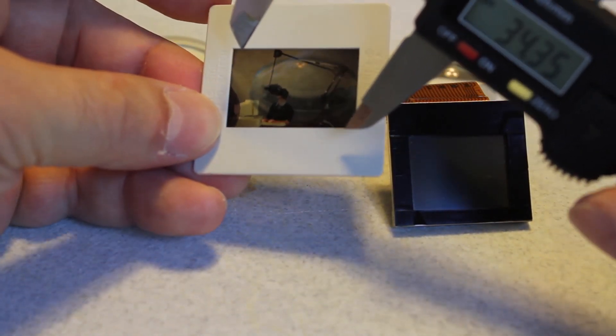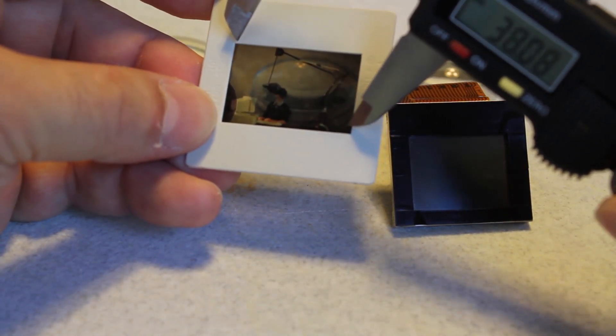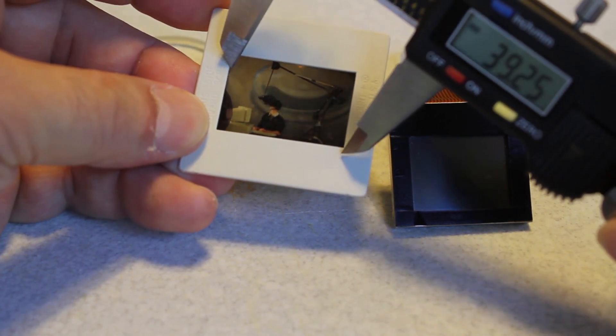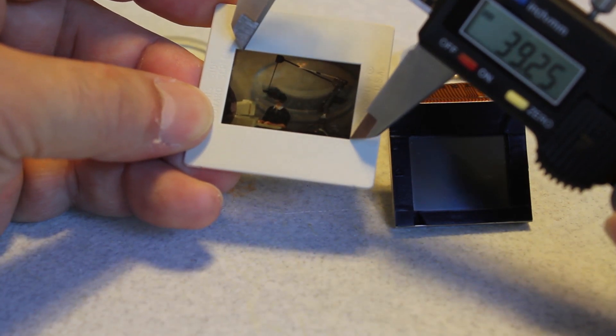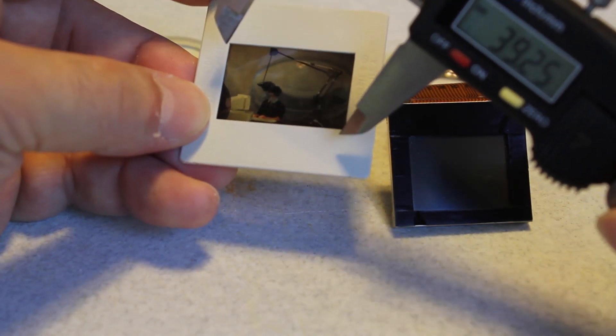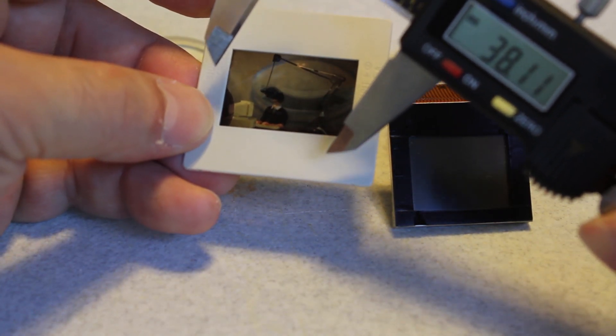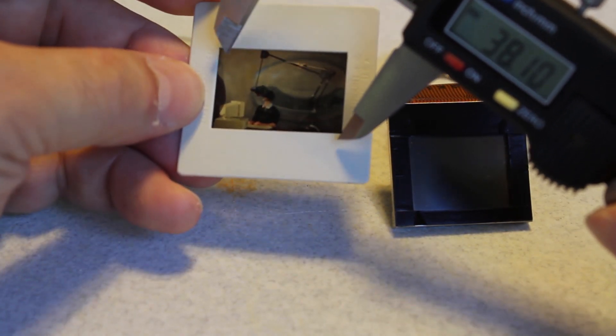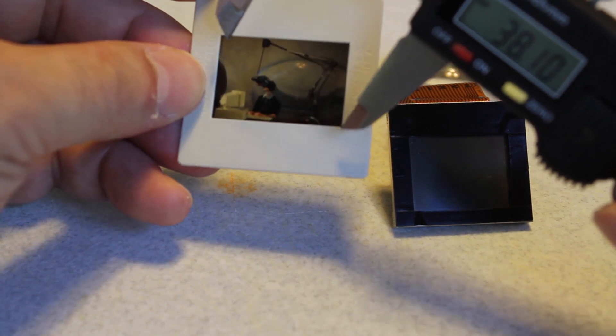For those of you familiar with 35mm photography, you'll know that a 35mm slide is in fact a 2 to 3 aspect ratio. But give or take a little bit, they're about the same and it's easier for me to use a 35mm slide to do this demo.